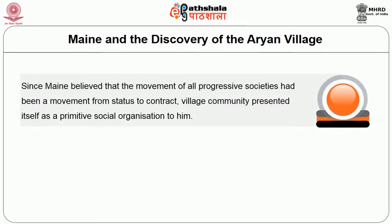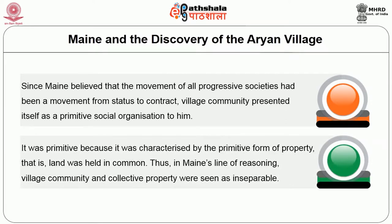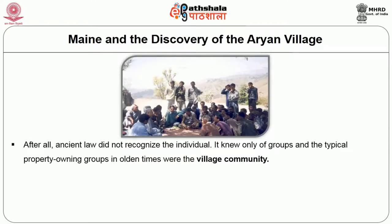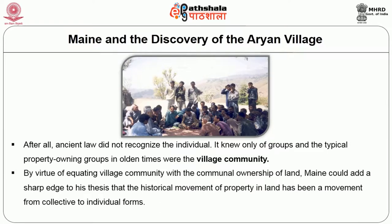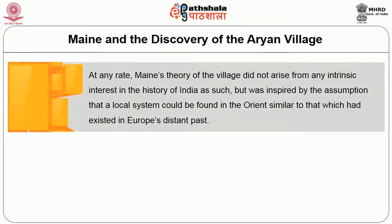Since Maine believed that the movement of all progressive societies had been from status to contract, the village community presented itself as a primitive social organisation. It was primitive because it was characterised by primitive property — land held in common. In Maine's reasoning, village community and collective property were seen as inseparable. Ancient law did not recognise the individual; it knew only groups, and the typical property-owning group in olden times was the village community. Maine's theory of the village was not inspired by intrinsic interest in Indian history but by the assumption that a local system could be found in the Orient similar to that which had existed in Europe's distant past.